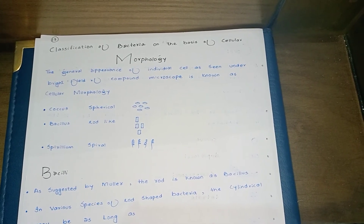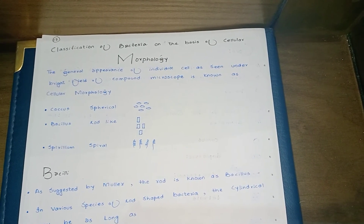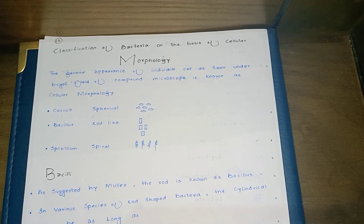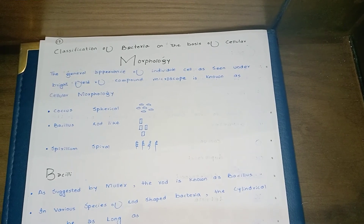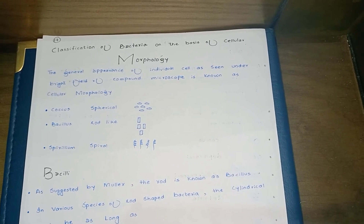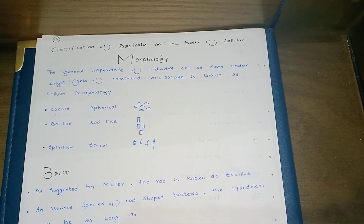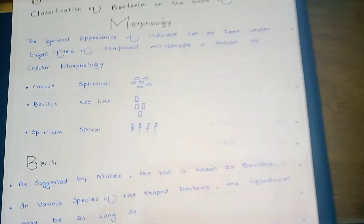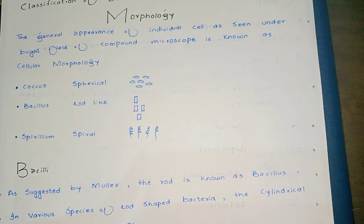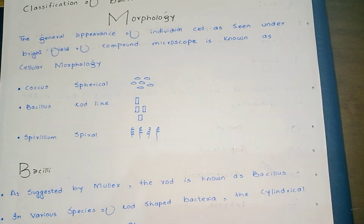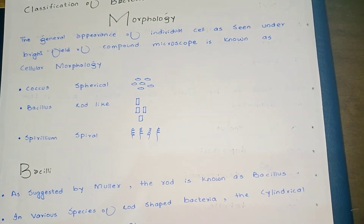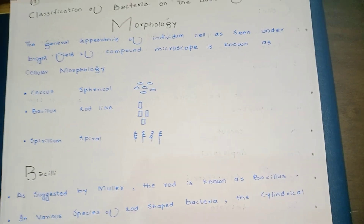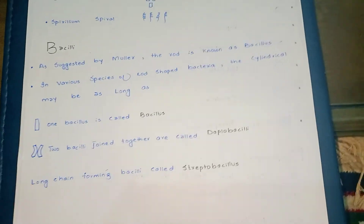According to cellular morphology, bacteria have different shapes, like coccus (spherical shape), bacillus (rod-like), and spirillum. We will learn about each one by one.